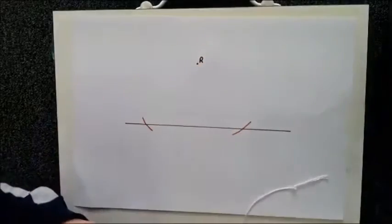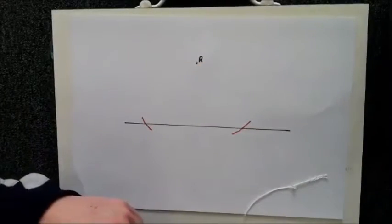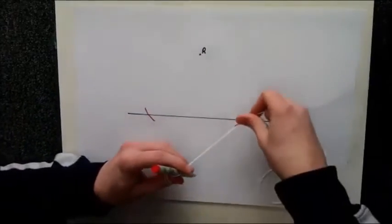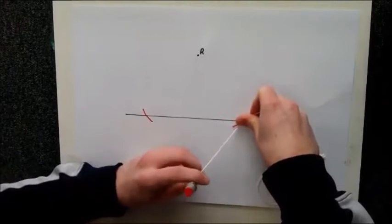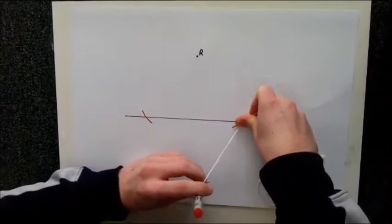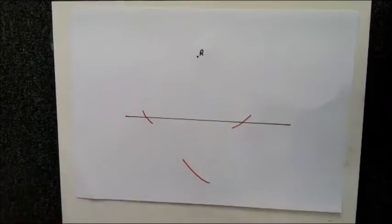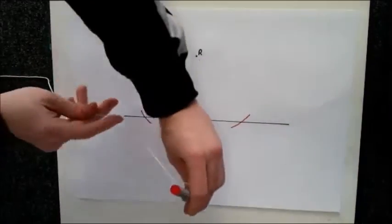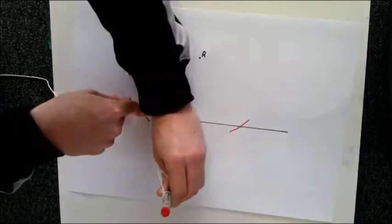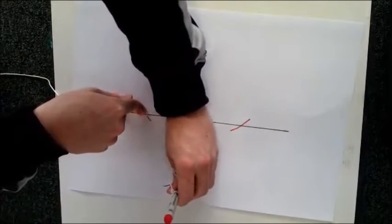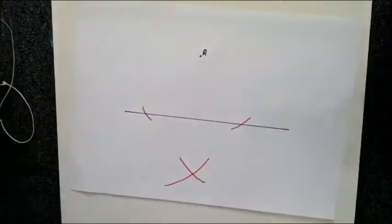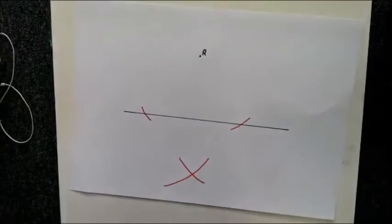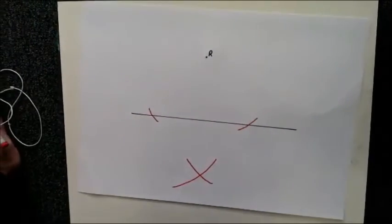From each point, draw an arc below the line so they cross. Draw a line from R to where the arcs intersect.